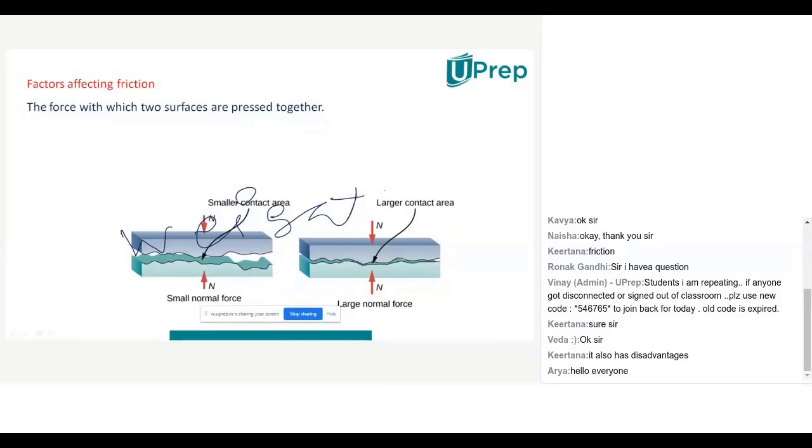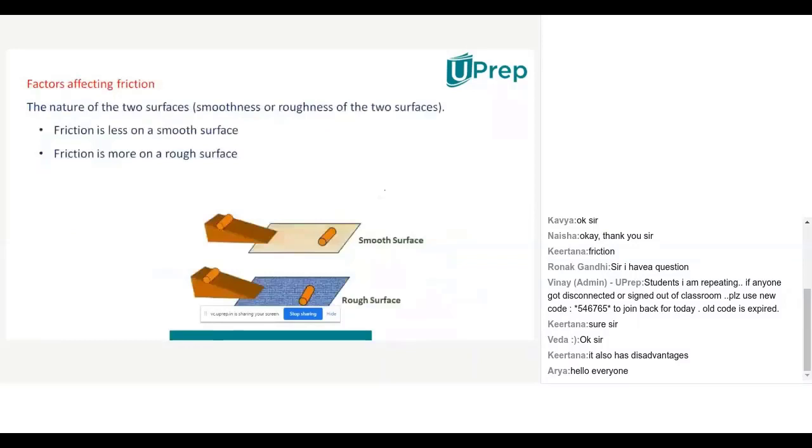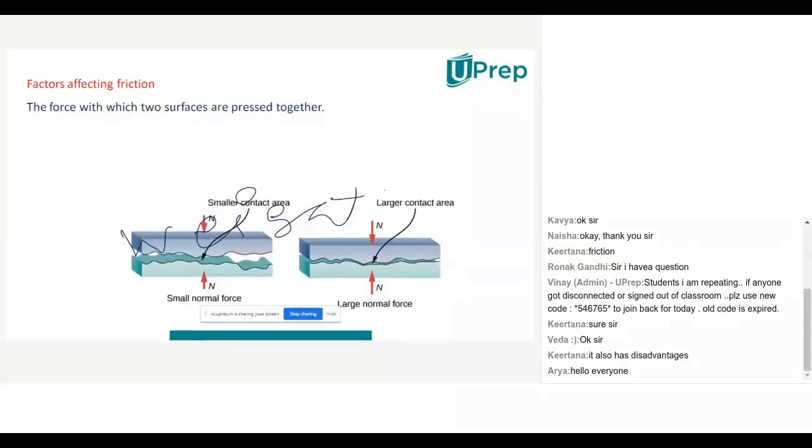That means, if weight of the object is more, frictional force will be more. If weight of the object is less, frictional force will be less. So, in this way, on how many factors the frictional force will depend, Nana? Frictional force will depend upon two things, Nana. One is nature of the surface and other is on weight of the object.